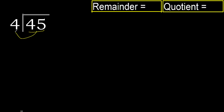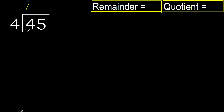45 divided by 4. 4 is not less, therefore we work with 4. Here, 4 multiplied by which number is nearest to 4 but not greater? 4 multiplied by 2 is 8 — 8 is greater. 4 multiplied by 1 is 4, which is not greater.